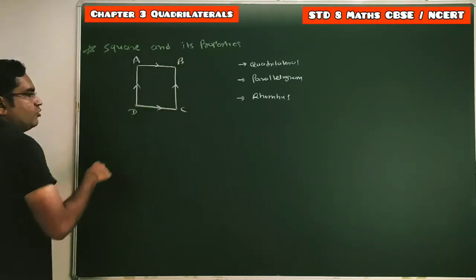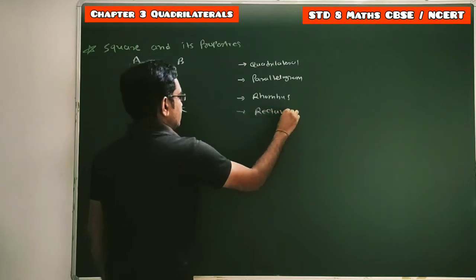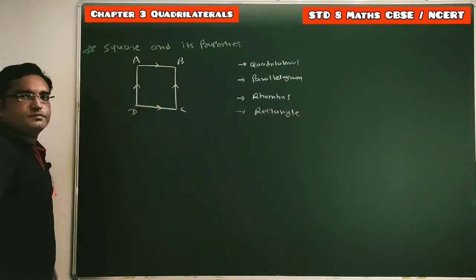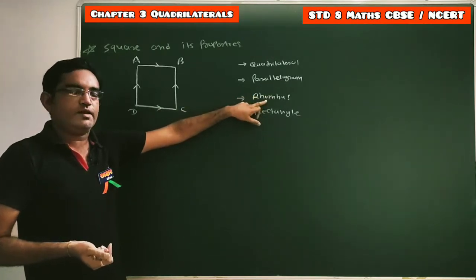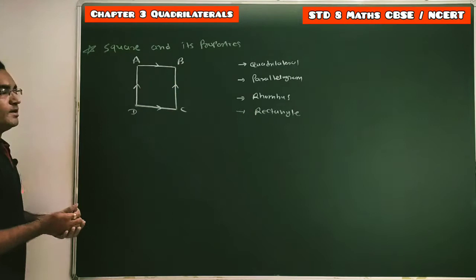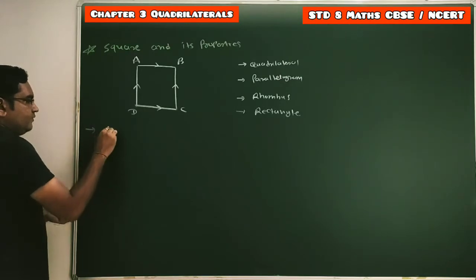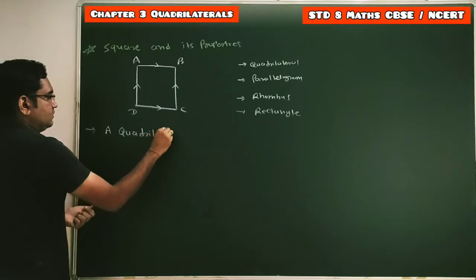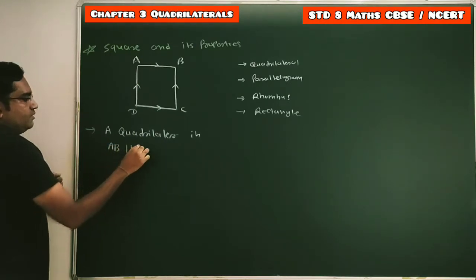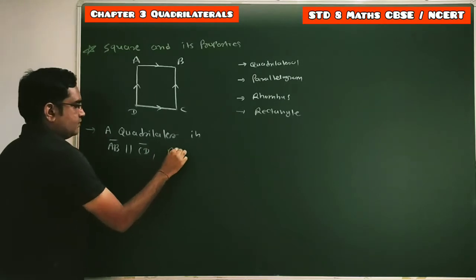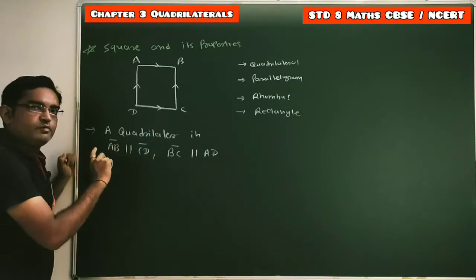So square ABCD is a rhombus because all four sides are equal. Can we say it is a rectangle? Yes, it is a rectangle — why? Because all four angles are equal. So a square is the quadrilateral in which both pairs of opposite sides are parallel, all four sides are equal, and all four angles are equal. Here we can write the definition: AB is parallel to CD and BC is parallel to AD — both pairs of opposite sides are parallel.